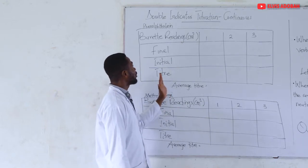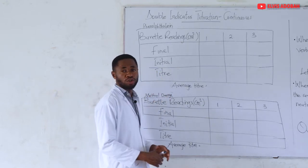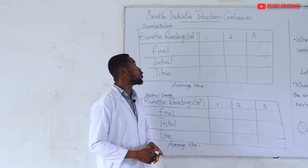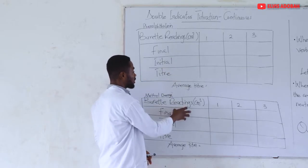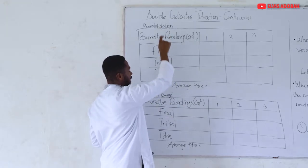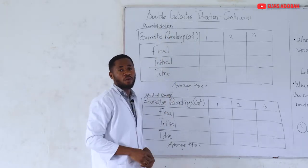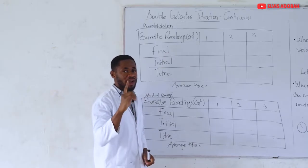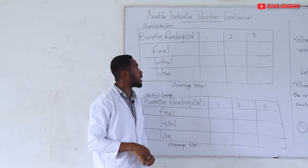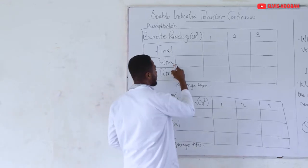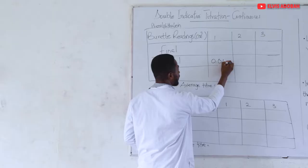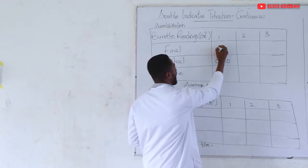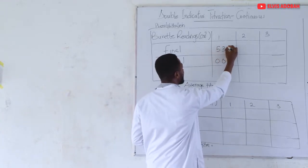This is how you prepare the table for the continuous double indicator titration. You prepare two separate tables: one for phenolphthalein and the other for methyl orange. In our first titration, we began with 0.00 and our end point was realized at 5.30.